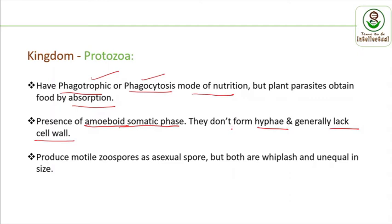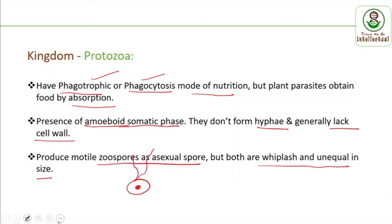They don't form hyphae as we see in fungi. If in a rare case there is a cell wall, it is mainly made of cellulose. They produce motile zoospores as asexual spores, both flagella being whiplash and unequal in size. In Oomycota we see both tinsel and whiplash flagella, but in Protozoa and Plasmodiophoromycota the organisms have two whiplash flagella.